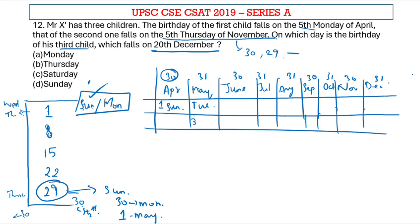If 29th of May is Tuesday, then 30th is Wednesday and 31st is Thursday, so 1st of June is Friday. Then 29th of June is Friday, 30th is Saturday, so 1st of July is Sunday. 29th of July is Sunday, 30th is Monday, 31st is Tuesday, so 1st of August is Wednesday. 29th of August is Wednesday, 30th is Thursday, 31st is Friday, so 1st of September is Saturday.